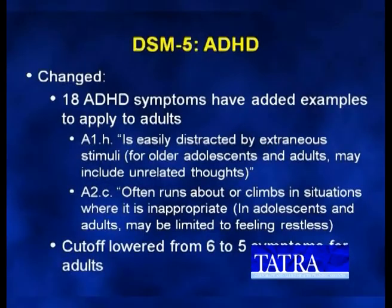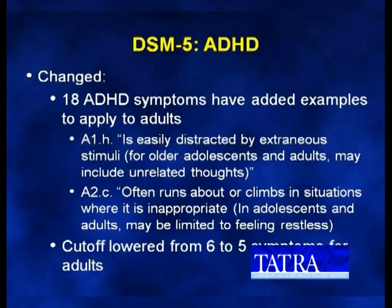Here are a few examples of the adult versions that have been added. The criteria 'easily distracted by extraneous stimuli' — for older adolescents and adults, this may include unrelated thoughts. The one that jumped out to me as most interesting: 'often runs about or climbs in situations where it's inappropriate.' Most adults don't do that, so what's the adult version? In adolescents or adults, this may be limited to feeling restless.